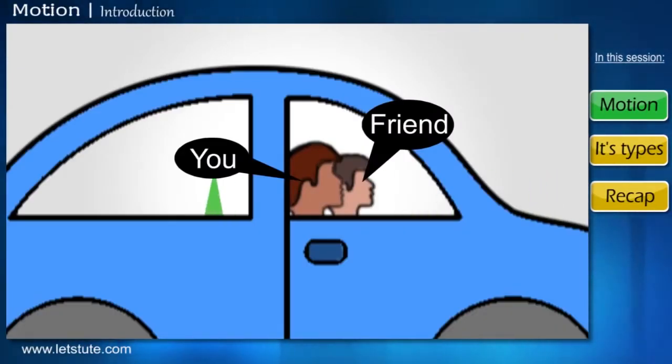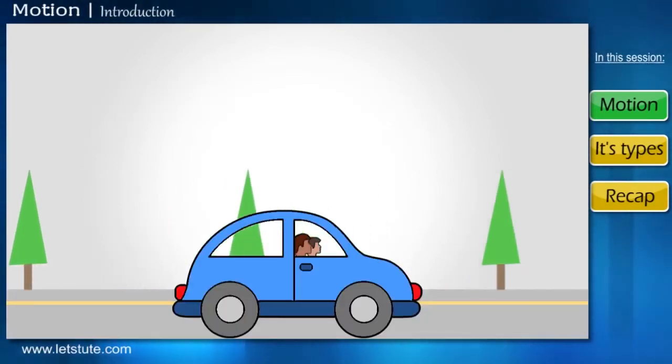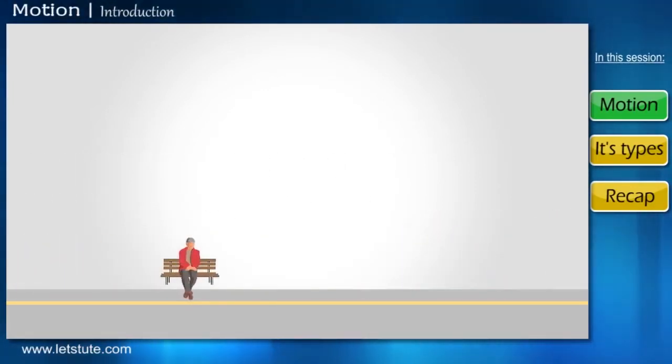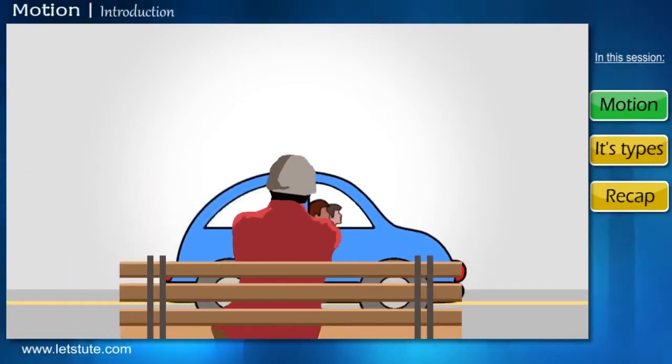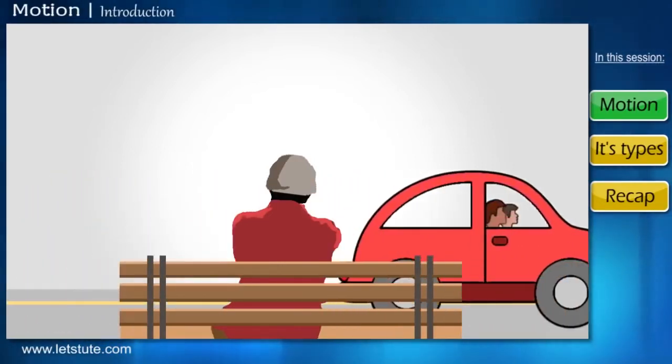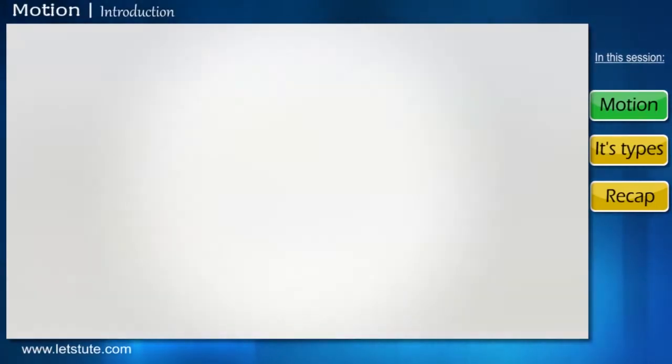Imagine you and your friend are sitting in a car, which is moving. You will notice that your friend is still or not moving, but everything outside the car window is moving behind, like this man here. But if you see the same situation from the man's perspective, then you would notice that it's the car that's moving, and with it, both you and your friend. This funny feeling is because, as mentioned earlier, motion is relative.